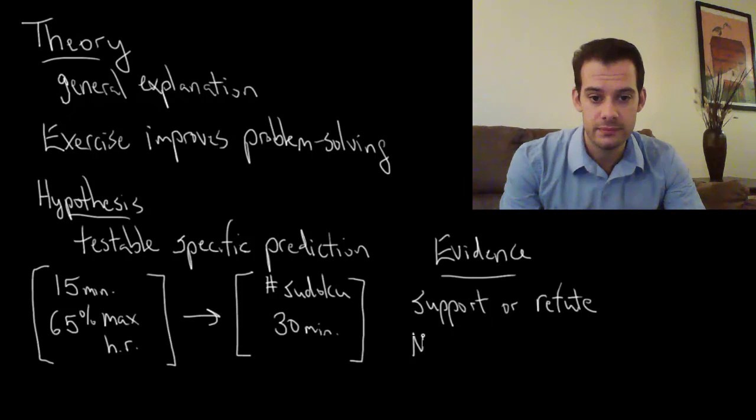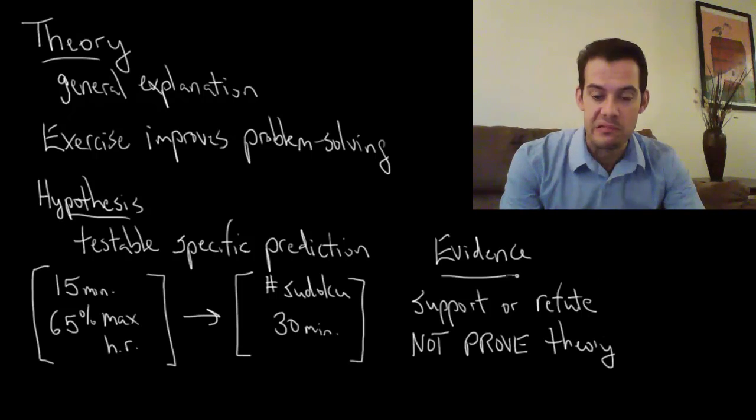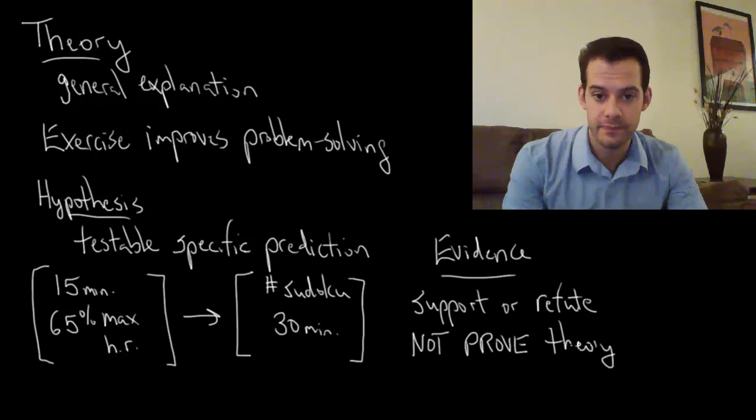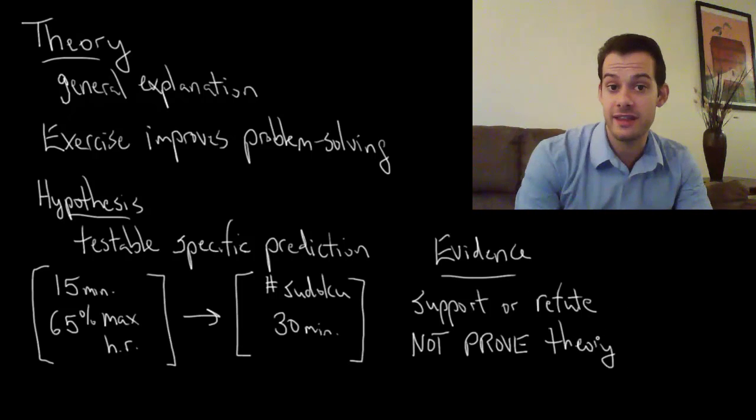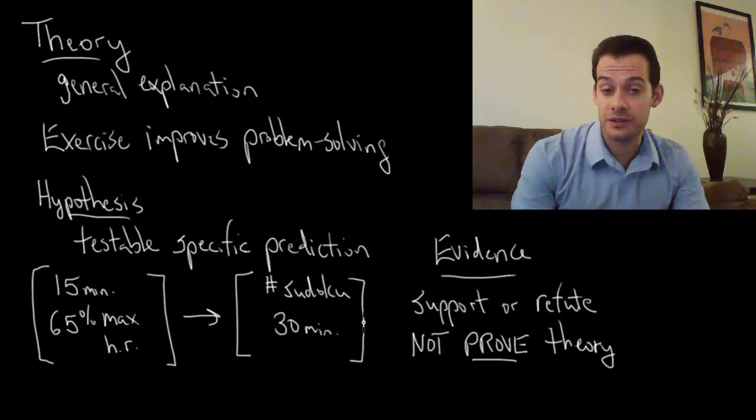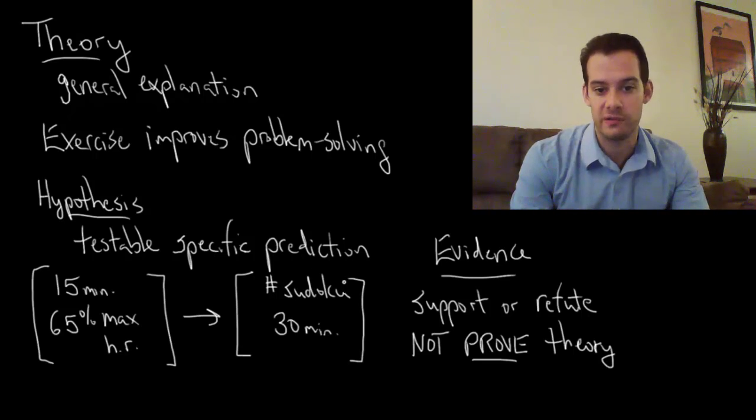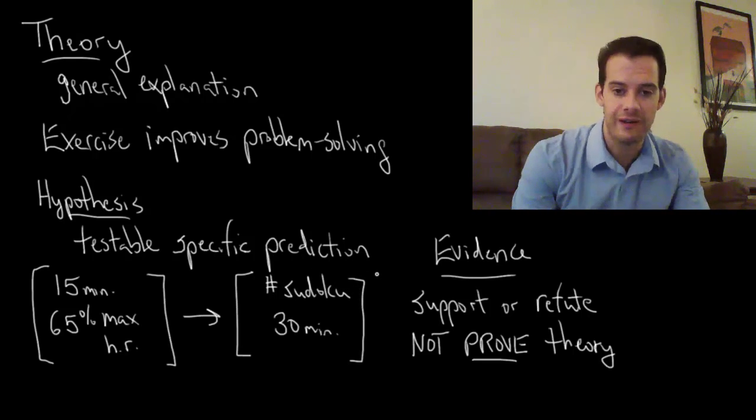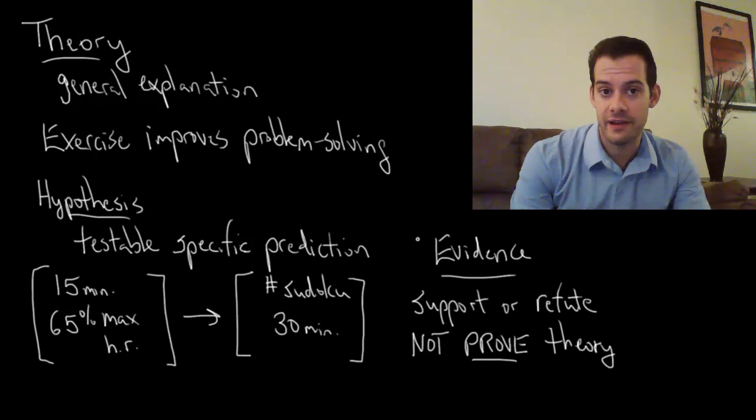But what I can't do is I can't say that I've proven my theory no matter how strong the evidence that I collect is. And this is because theories can't be proven because they're about general properties. So I'm not going to prove that exercise improves problem solving. What I can say is that my hypothesis that this particular exercise would improve this particular problem solving, I can say that was supported, but I can't say that theory was proved.